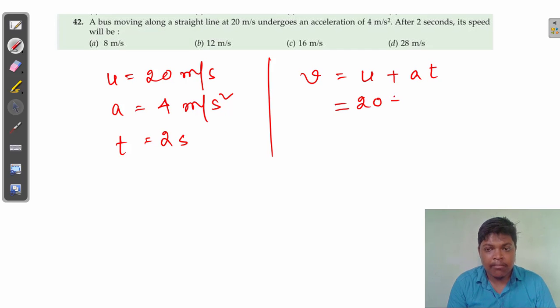The initial speed of the bus is 20, plus it is moving with an acceleration of 4 meters per second squared, and we have to find out the speed after 2 seconds. So at the place of time, we should write down the value of 2.